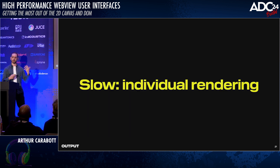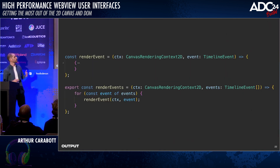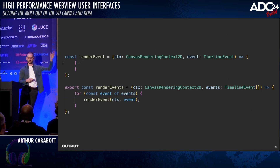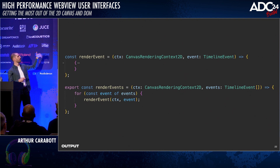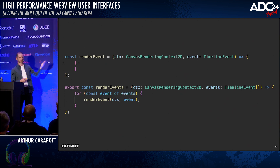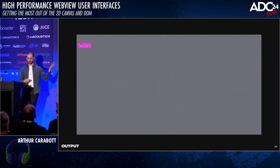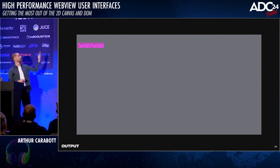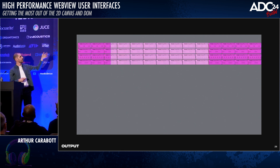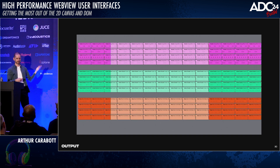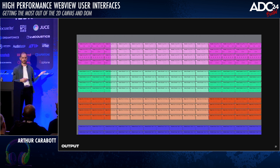With individual rendering, you'd write a render event function and then loop over all your event data, calling render event on each. Visually, it looks like this: you render one event, then the second, the third — this one has a bit of selection on it — the fourth, fifth, and eventually all of them for the first track, then the second, third, and fourth.